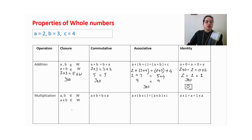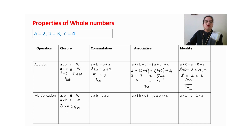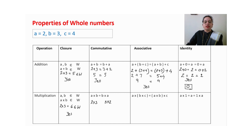Now multiplication: value of a is 2 multiplied by 3 equals 6, and 6 is also a whole number. So yes, we can observe closure property in multiplication of whole numbers. For commutative property: 2 multiplied by 3 and 3 multiplied by 2 — both give 6. So we can observe commutative property in multiplication of whole numbers.